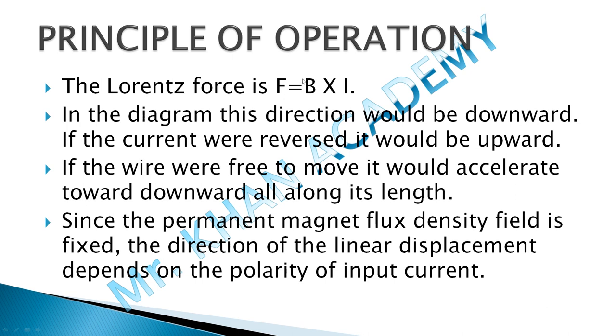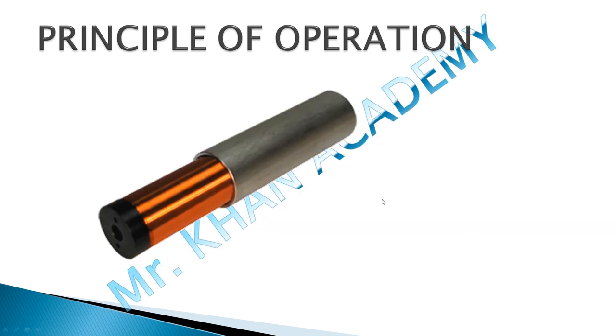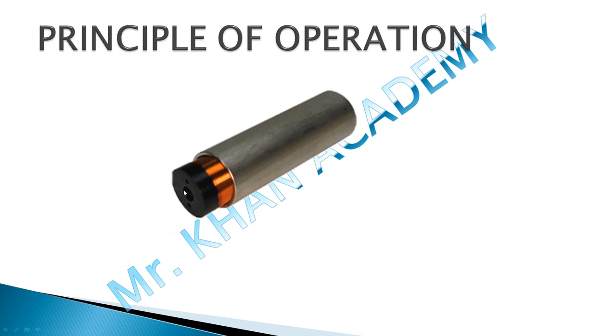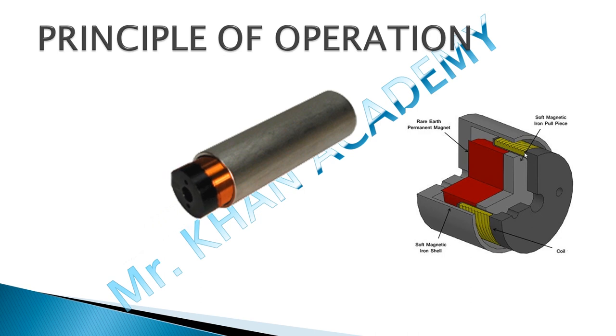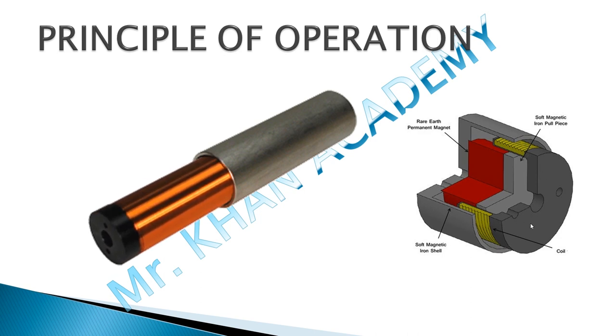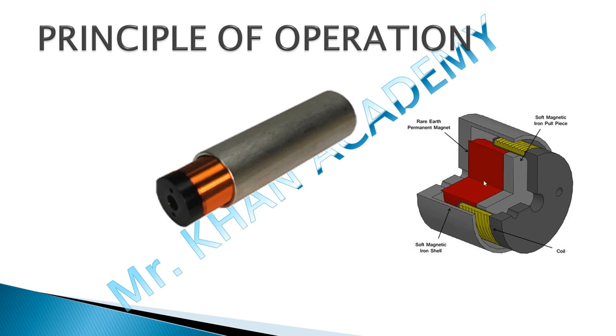This is the animated video regarding how the voice coil actuator moves. This is the housing, the casing, this is a holder. On this holder the coil is there. If we see the cross section, this is the hollow holder. Inside, again part of the casing is there. This is E-shaped type casing in which permanent magnet is there.